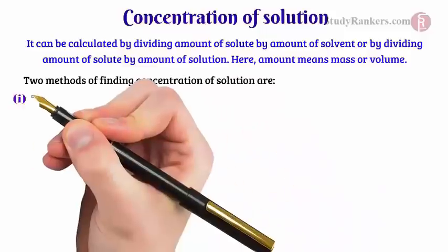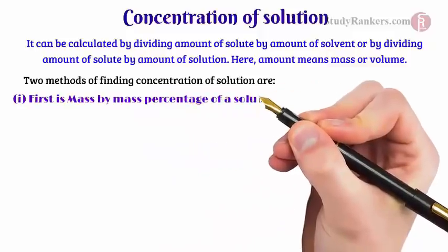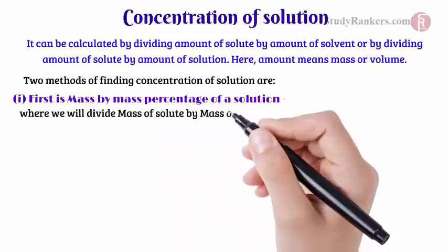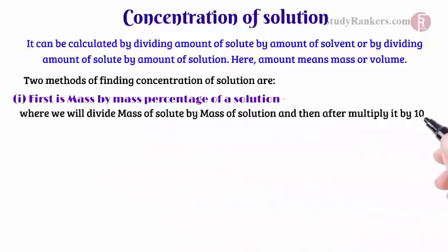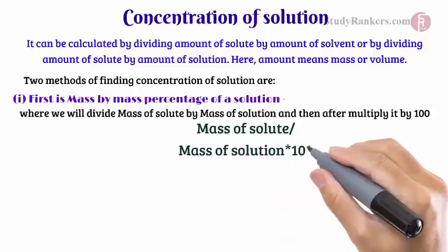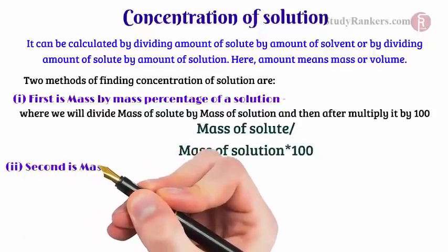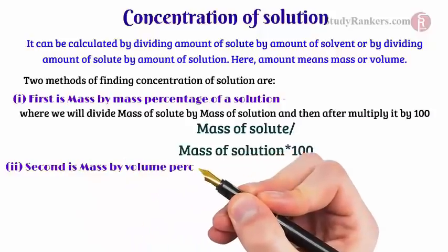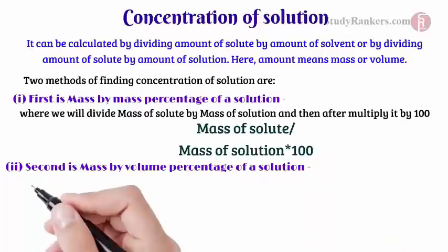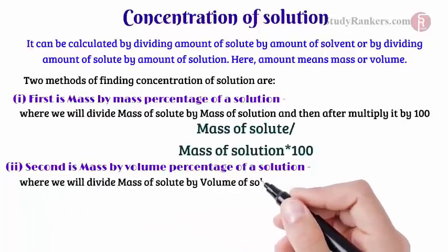Two methods of finding the concentration of a solution are: first, mass by mass percentage of a solution, where we divide the mass of solute by the mass of solution and then multiply it by 100. And second is mass by volume percentage of a solution.